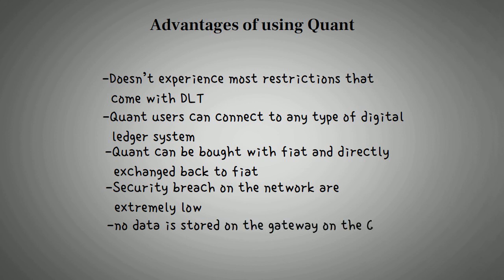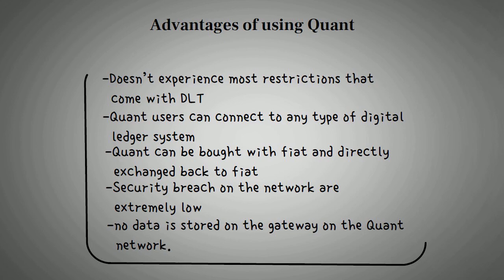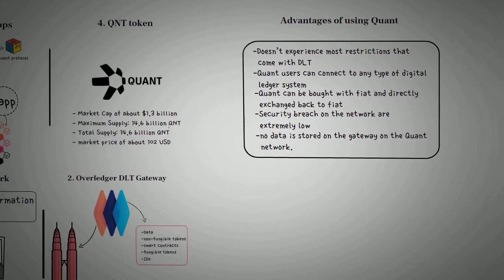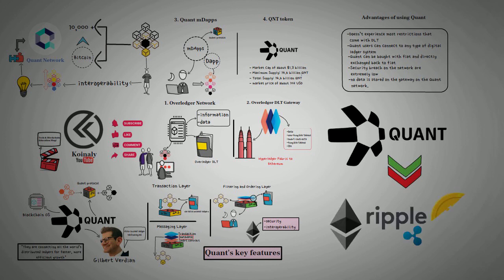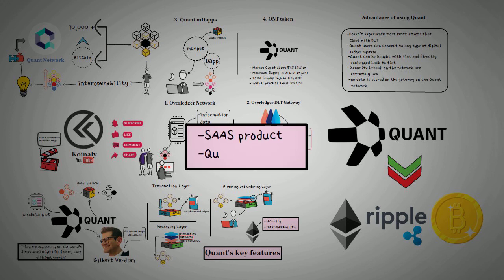We can keep going about what the Quant Network is trying to achieve, but we have to wrap this up. Using the Quant Network, you can connect to blockchains like Ethereum, Ripple, and Bitcoin. Aside from these, Quant is also working on a SaaS product and a Quant App Store that will add more resources to the Quant ecosystem.